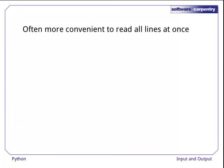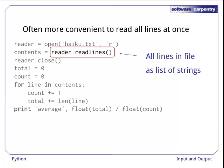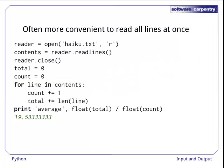Memory permitting, it's often more convenient to read all the lines in the file at once. Here's a program that uses ReadLines with an S on the end to do that. It returns a list of strings, which the program assigns to the variable contents. The program then loops over that list with for instead of using a while to read from the file until it's exhausted. Again, the output is a little over 19.5 characters per line.